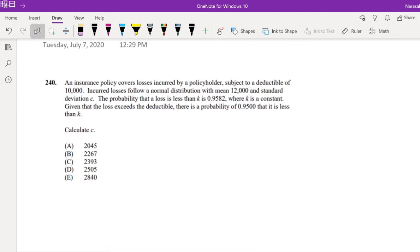Pause the video real quick and try this problem yourself. Okay, I hope you attempted it, let's just jump right in. An insurance policy covers losses incurred by a policyholder subject to a deductible of $10,000. Incurred loss follows a normal distribution with a mean of $12,000 and a standard deviation of c.